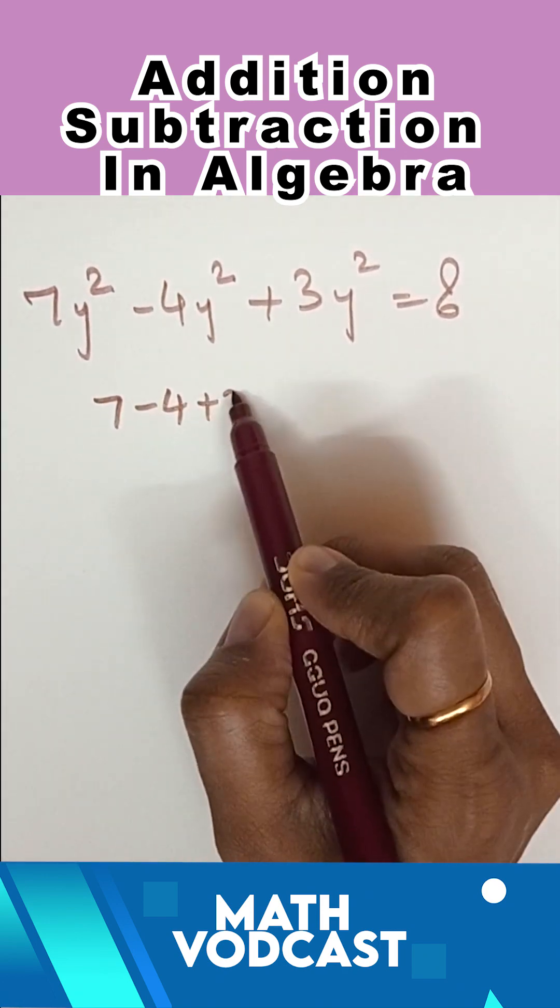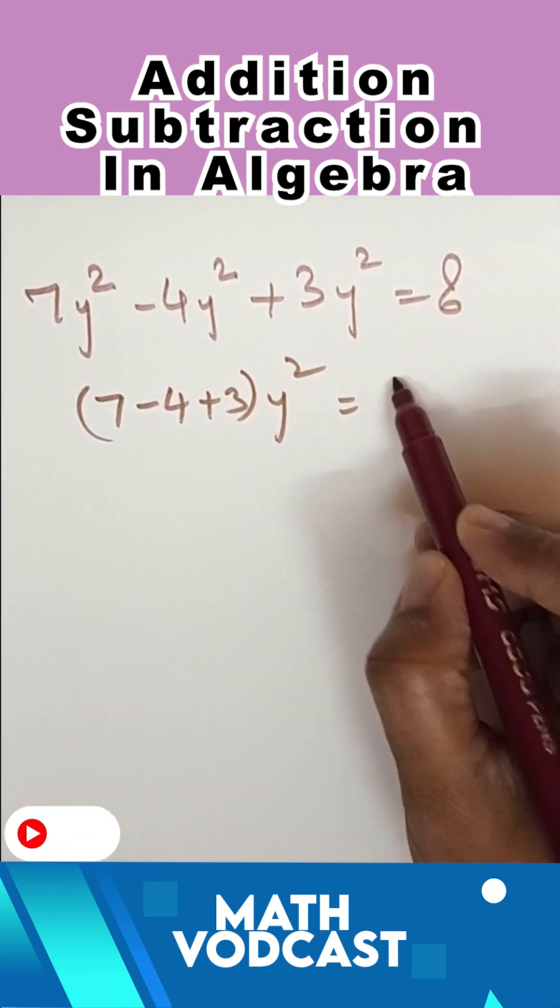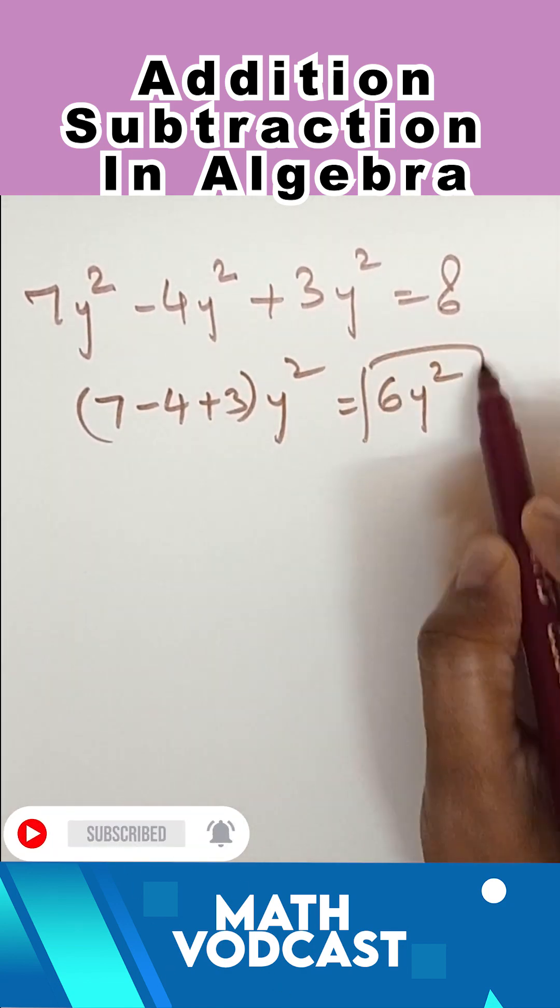It is (7 minus 4 plus 3)y². 7 minus 4 is 3, and 3 plus 3 is 6, which equals 6y². This is your answer.